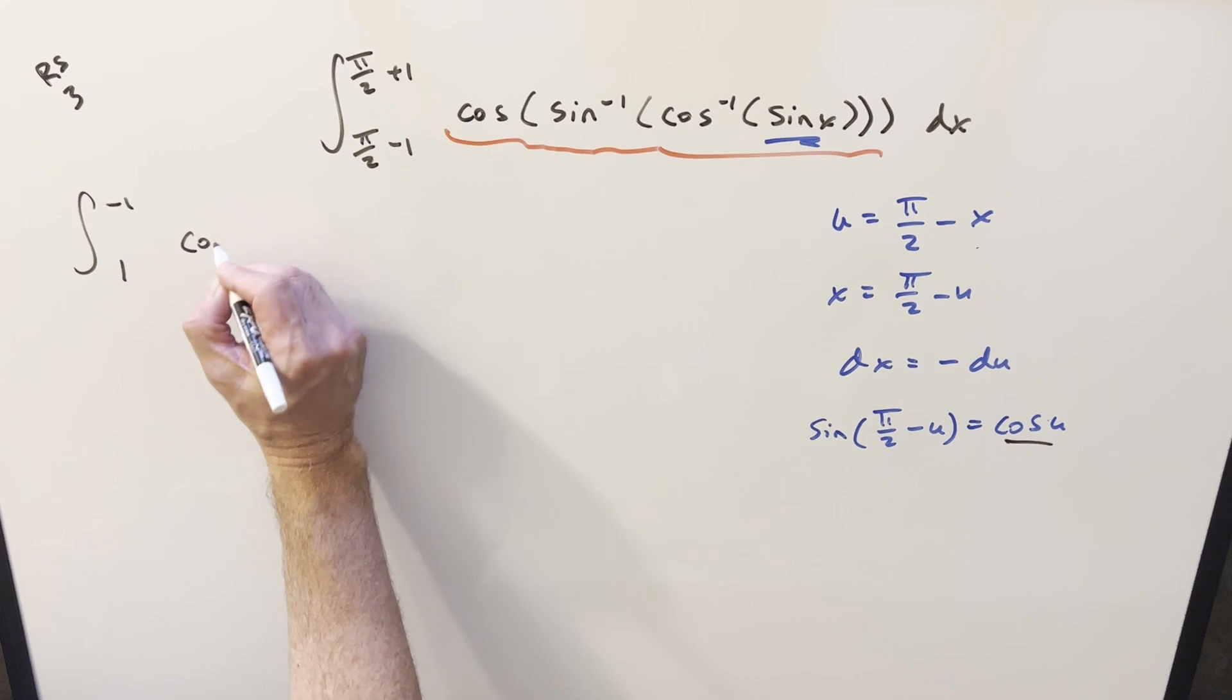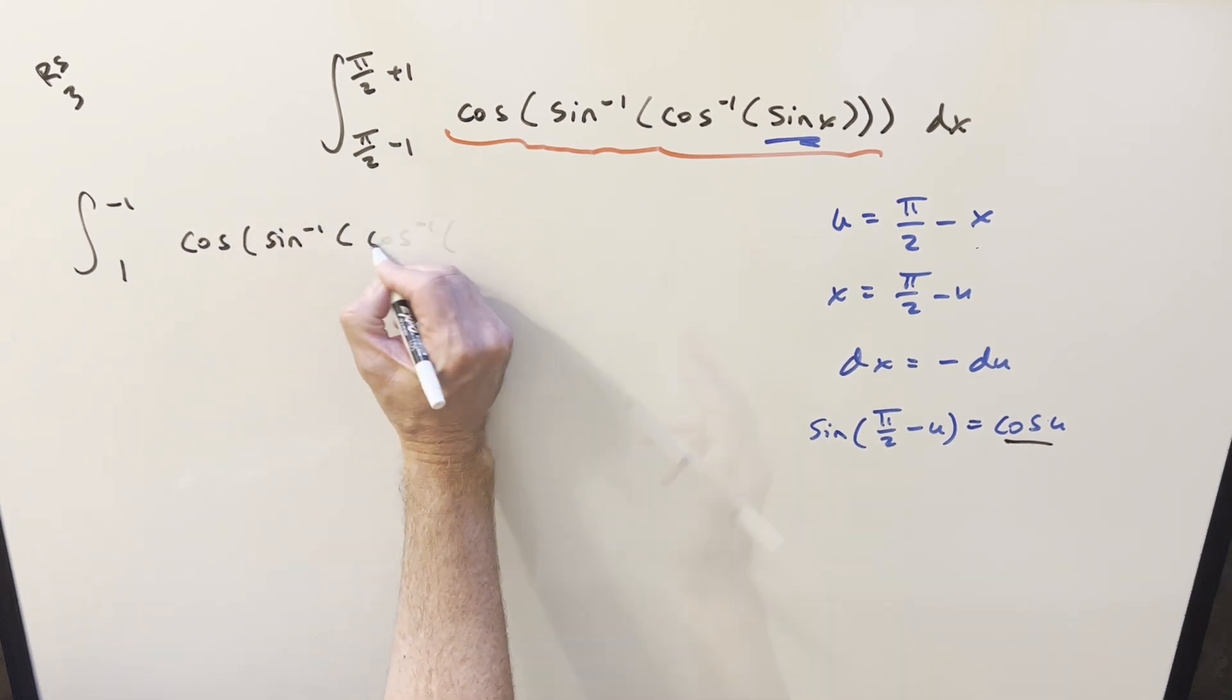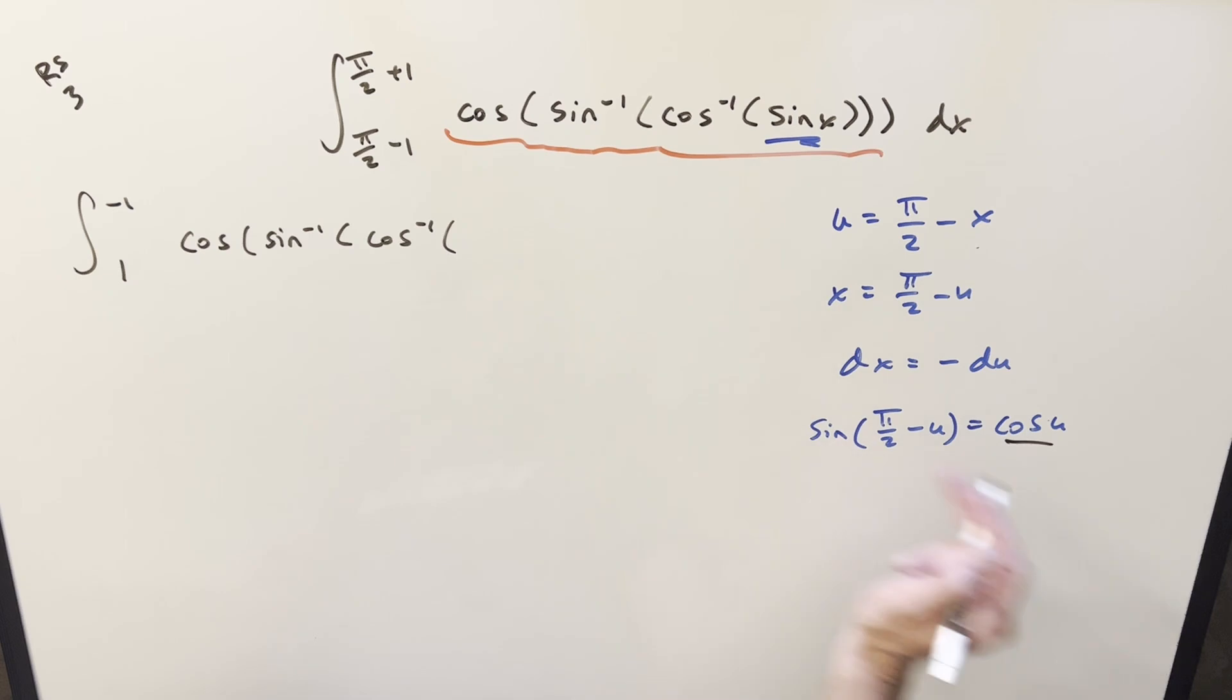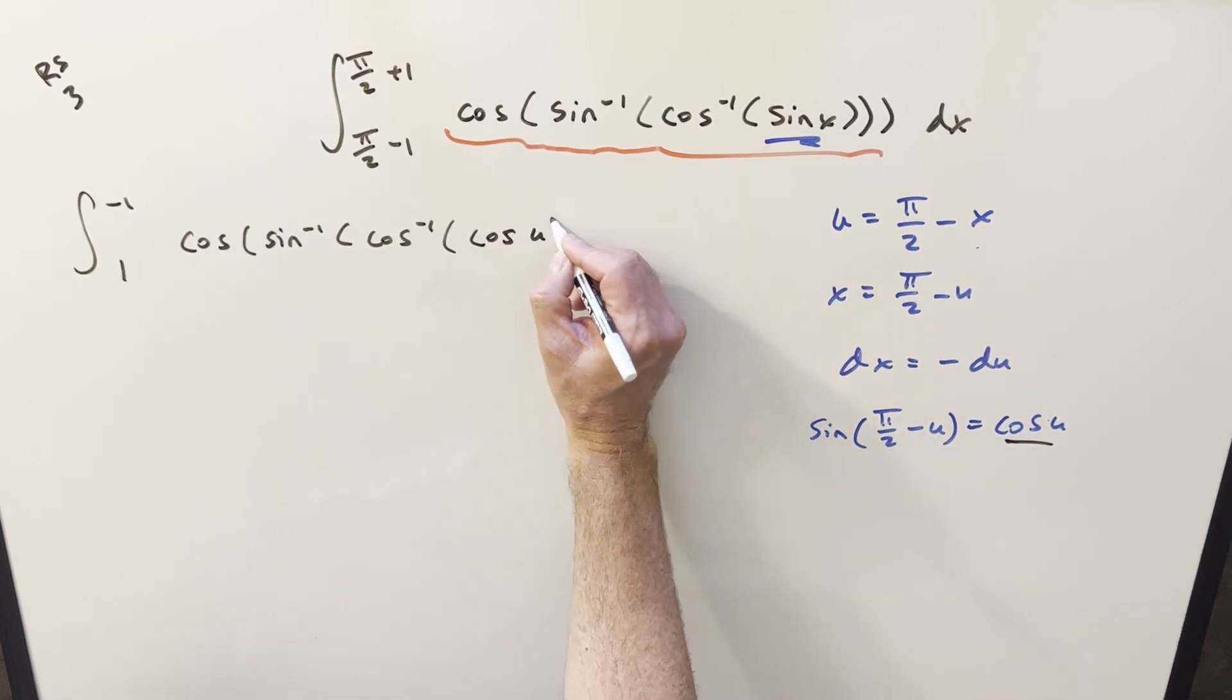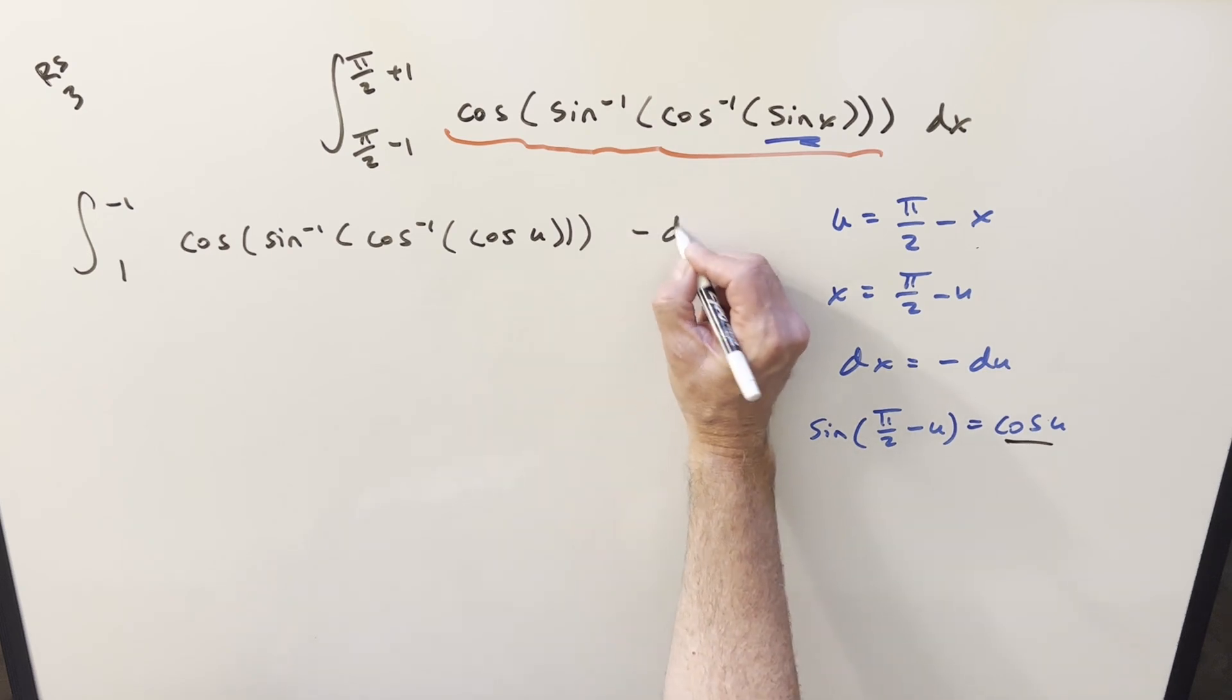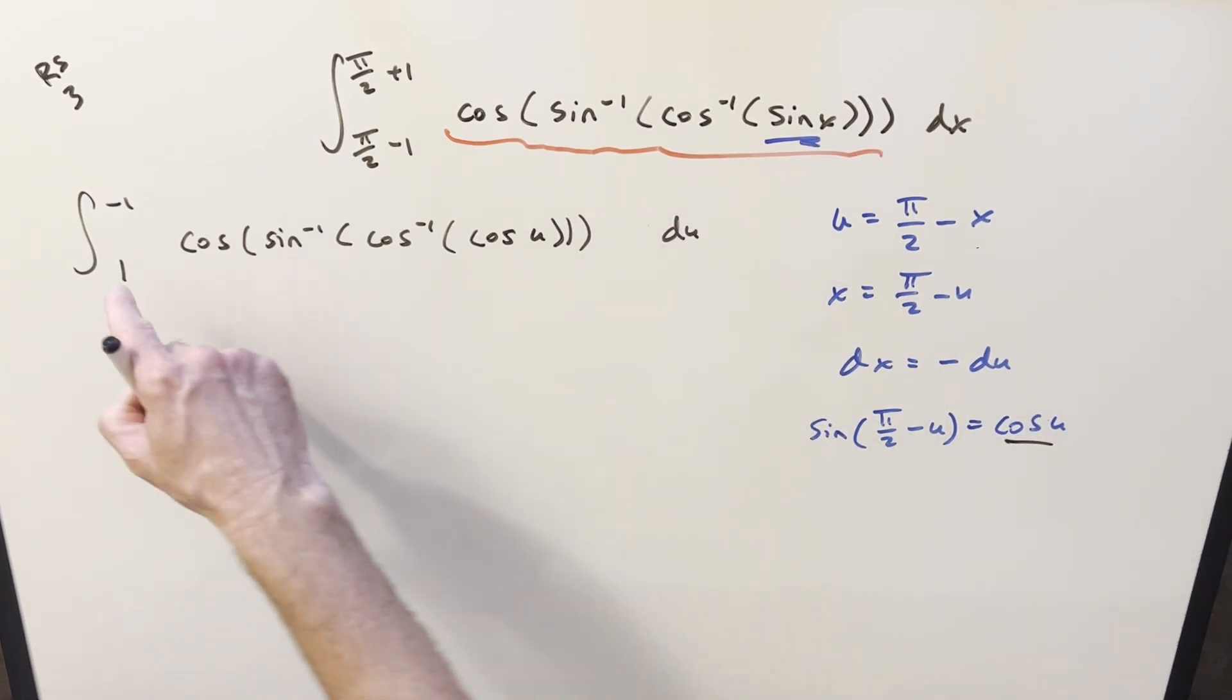Then basically just copying down all the first part until we get to just the sine. But now for sine x, we're just going to use this value here. This becomes cosine of u. And then our dx is going to be just minus du. But then I can take this minus sign and use it to flip our bounds so we get the positive 1 up top now.